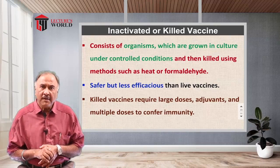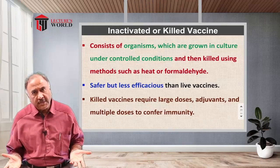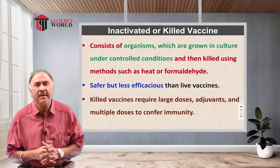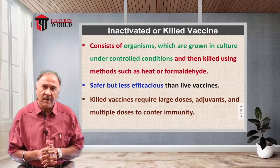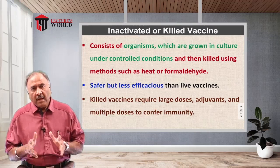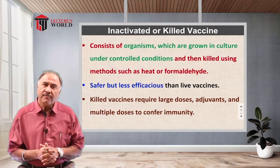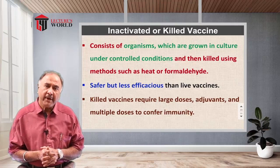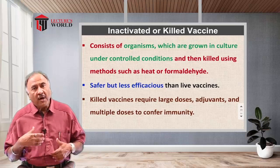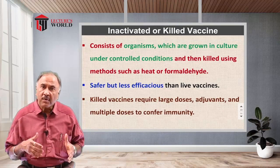This results in the loss of virulence because the organisms are now killed. However, their antigenicity is maintained just as it is in a live organism, and therefore this proves to be highly immunogenic. One important advantage of killed vaccines is that they are very safe to use compared to live vaccines. Killed vaccines can be used in larger doses along with adjuvants, and multiple doses can be given to confirm immunity.